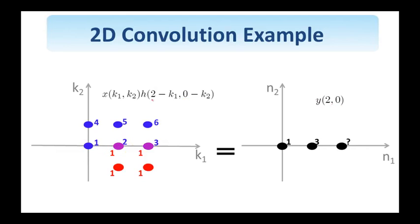I'm looking at the next possible shift, n1 equals 2, n2 equals 0, therefore I find the output at 2, 0. I see that now these two pixels overlap and therefore if I carry out the multiplication and the summation, I multiply the values of the pixels that overlap and carry out the summation. There are only two in this particular case. I see that the value of the output at 2, 0 equals 5.